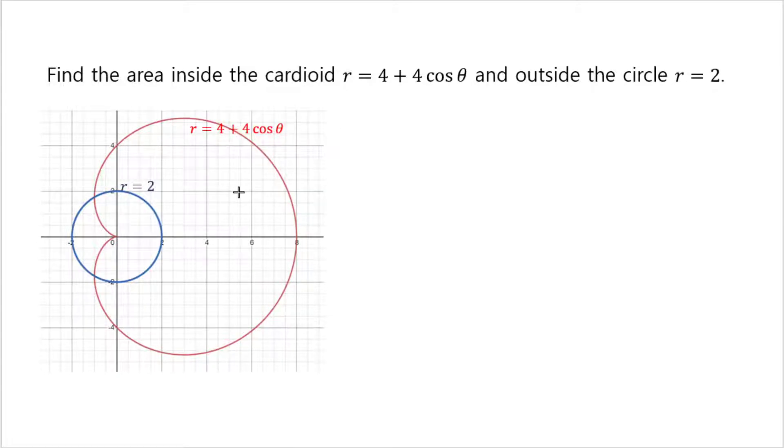Find the area inside the cardioid r equals 4 plus 4 cosine theta and outside the circle r equals 2. So you have this cardioid 4 plus 4 cosine theta and r equals 2 is a circle, and you want something that's inside the cardioid but outside the circle. So this is the area that you want to find.